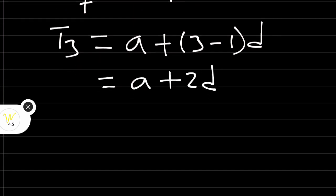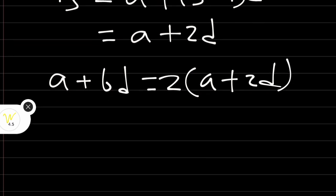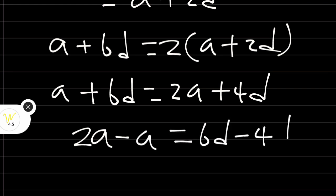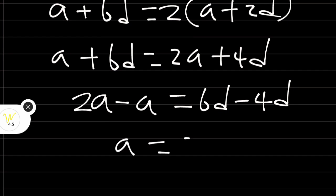But don't forget the question says the seventh term which is A plus 6D is twice the third term, A plus 2D. So let's work on this. We have A plus 6D is equal to 2A plus 4D. Let's collect the like terms. We have 2A minus A is equal to 6D minus 4D. And we have A is equal to 2D. This is equation 1.